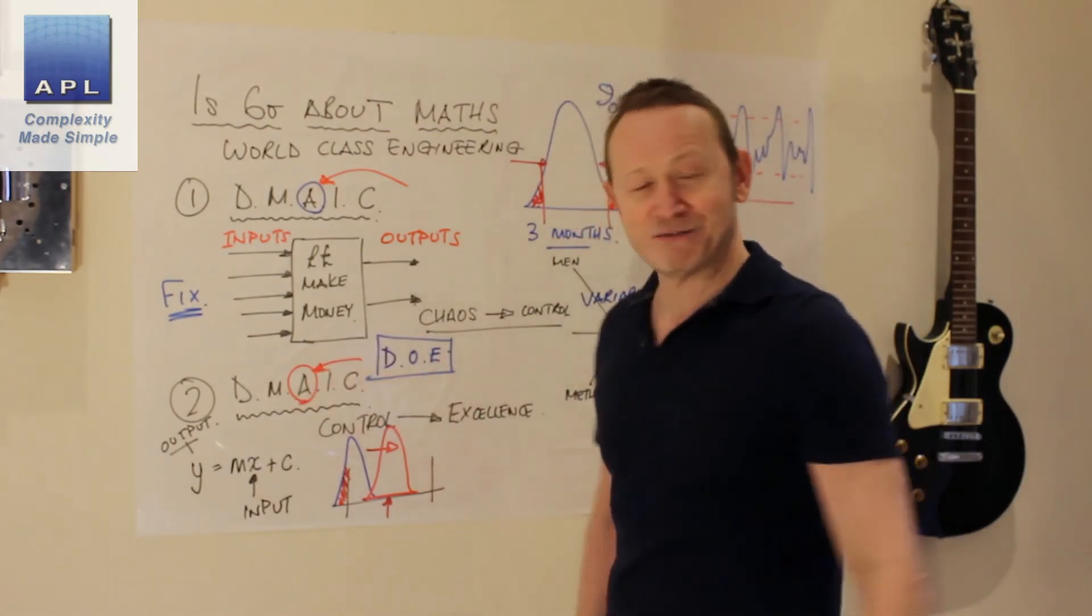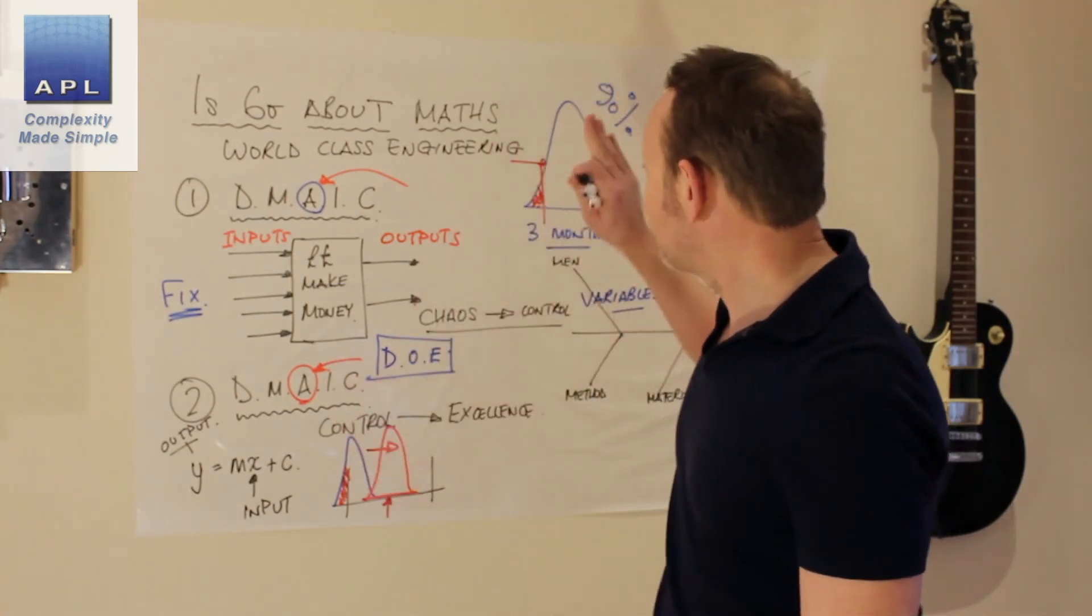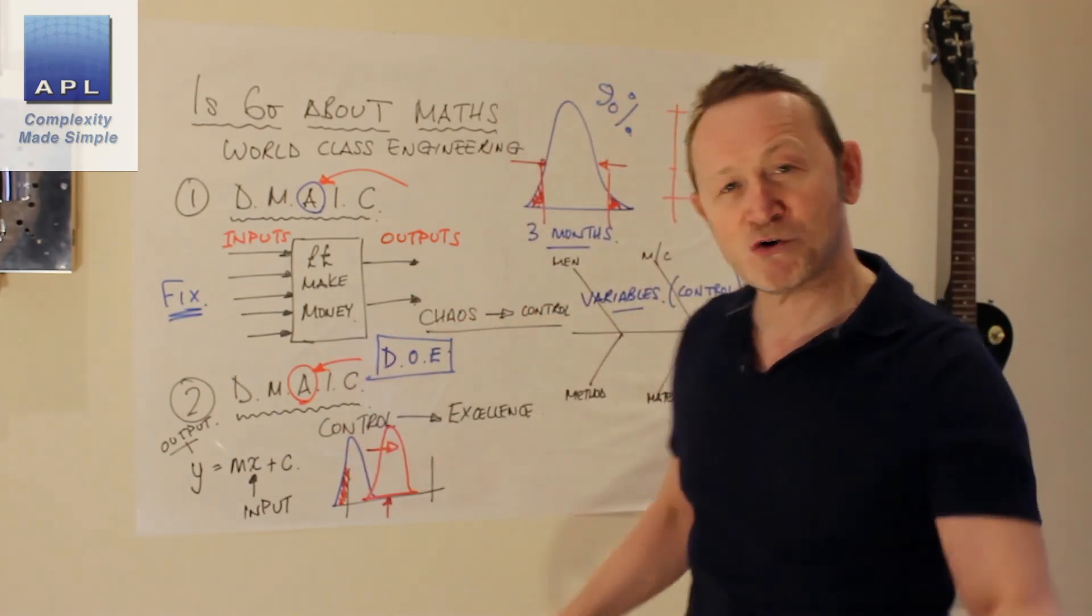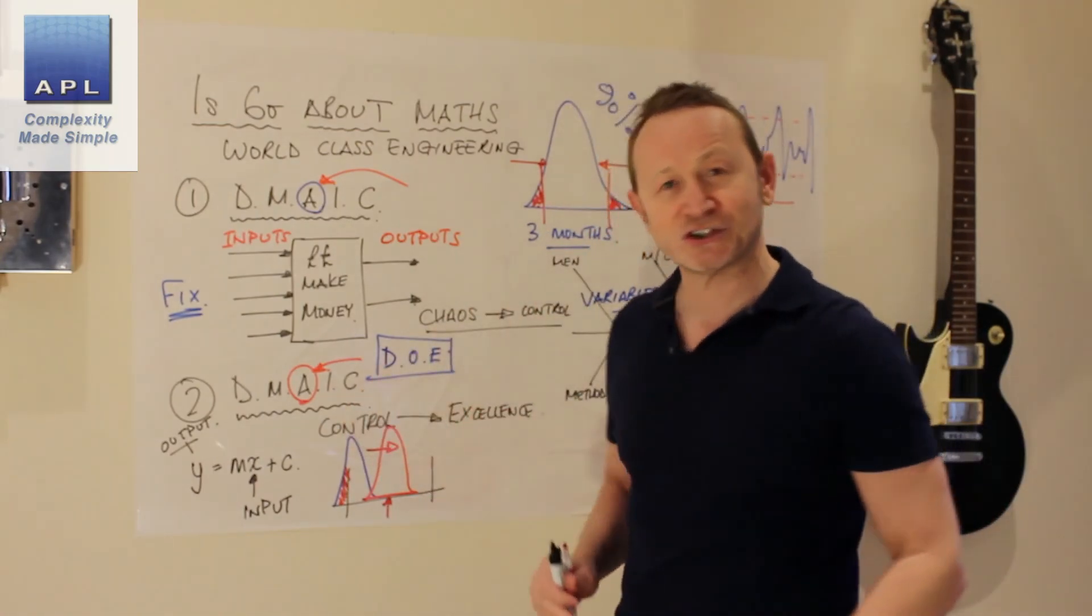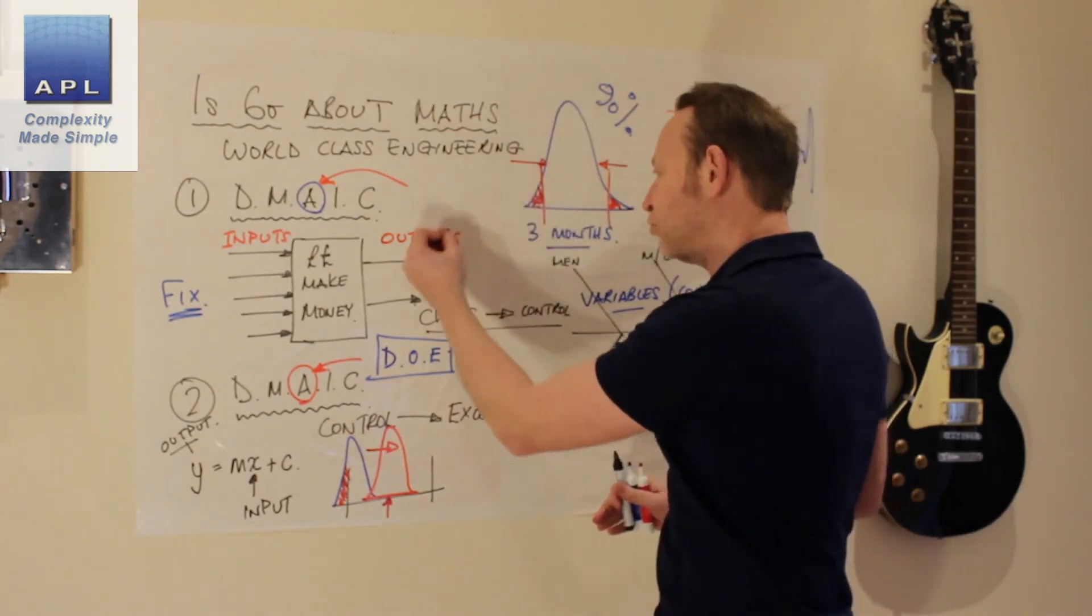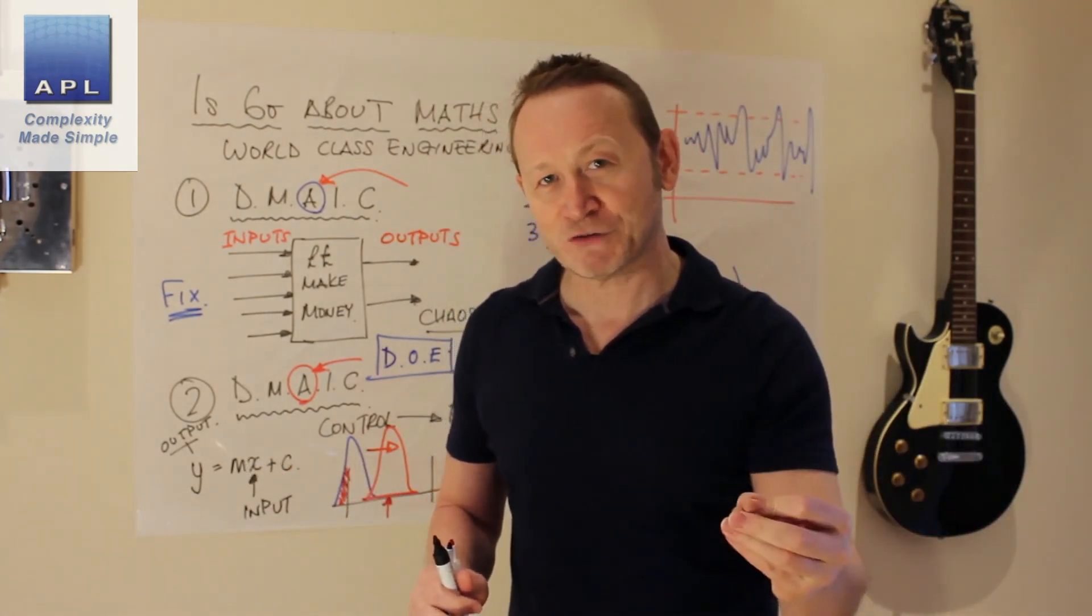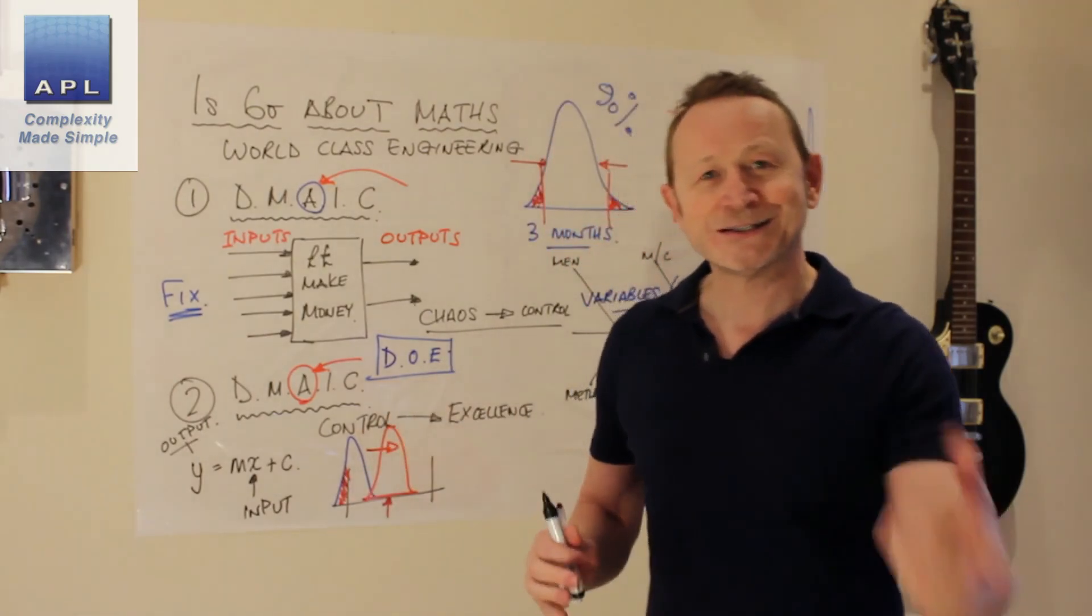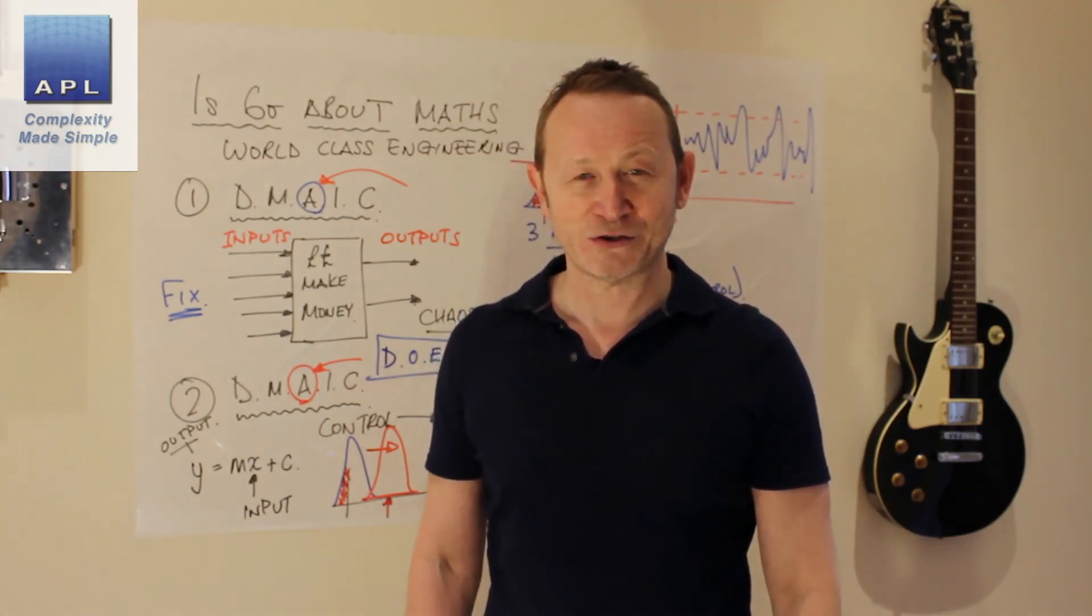So now, I get heavy hitting mathematics out. But this is round two. Often this is round one. Chaos to control is round one. Control to excellence is round two. Round one needs no mathematics. Just the laws of physics. Round two. Control to excellence. Now I'll pull the mathematics out of the toolbox.